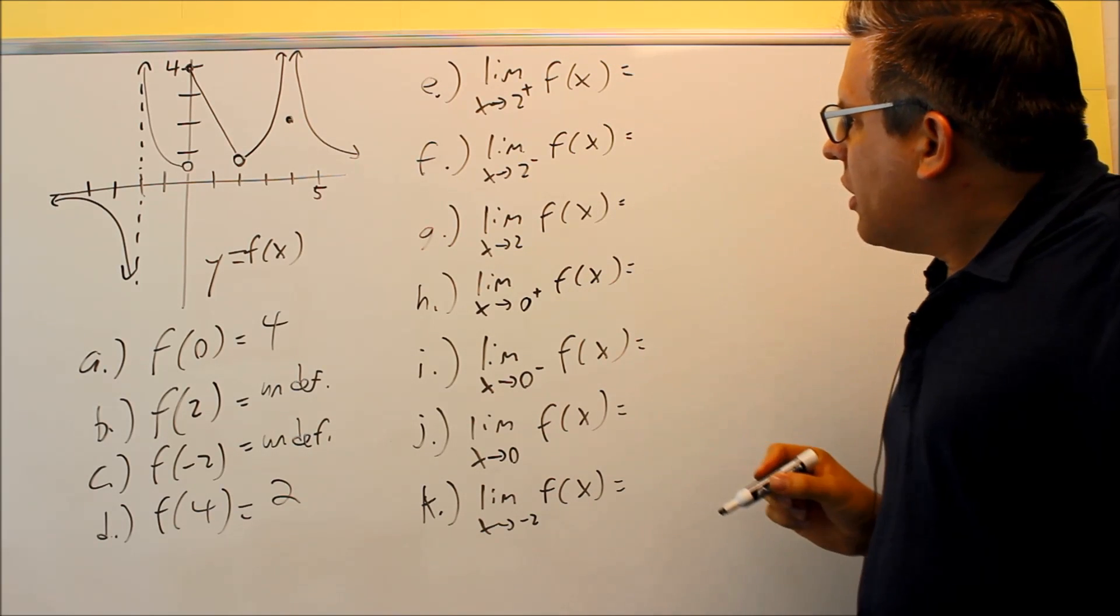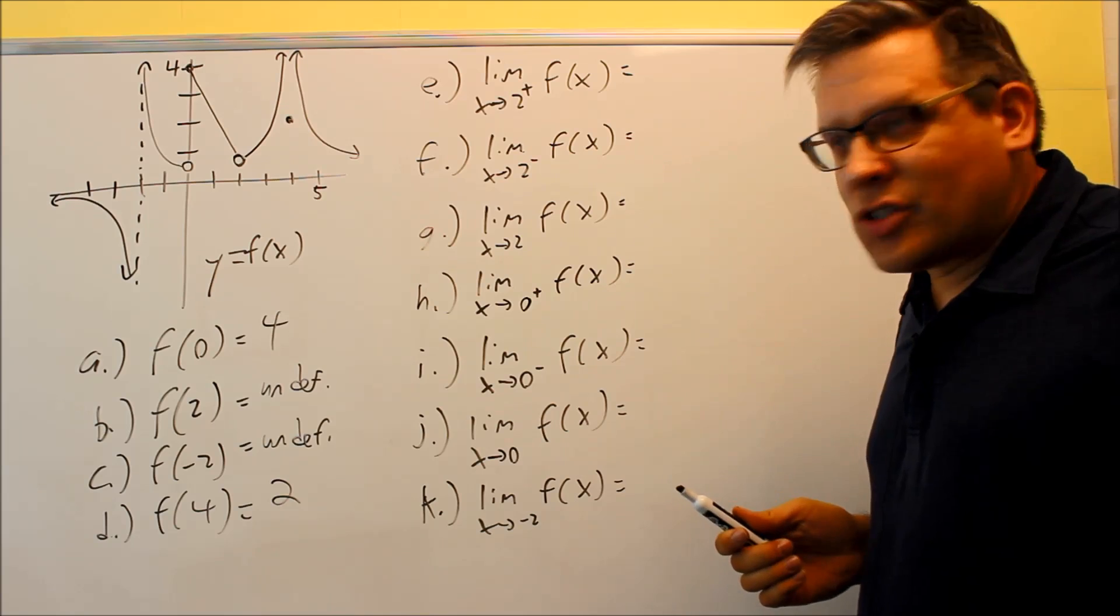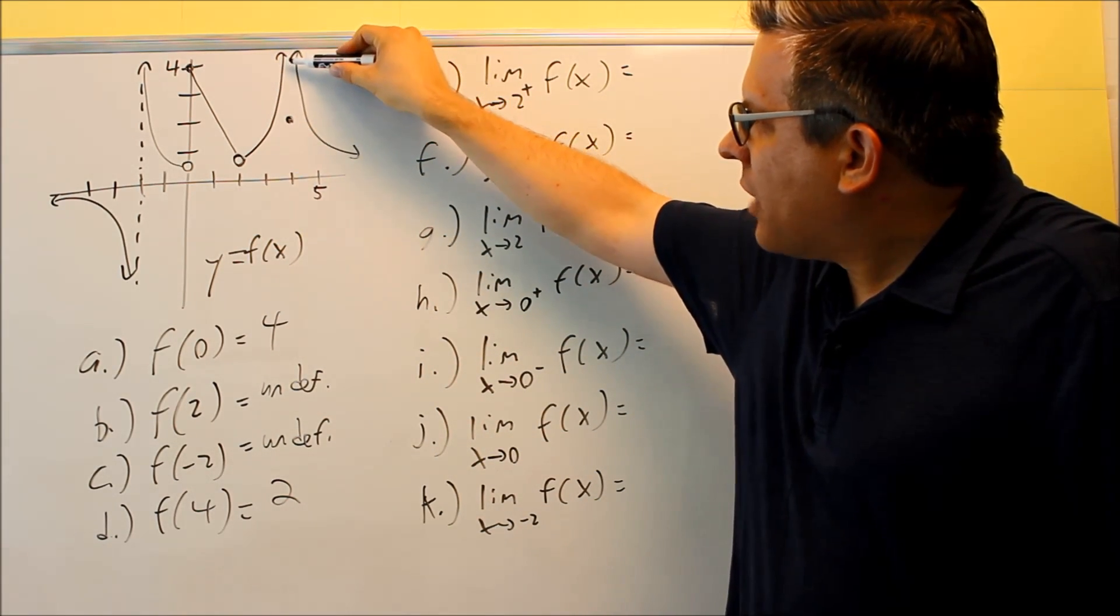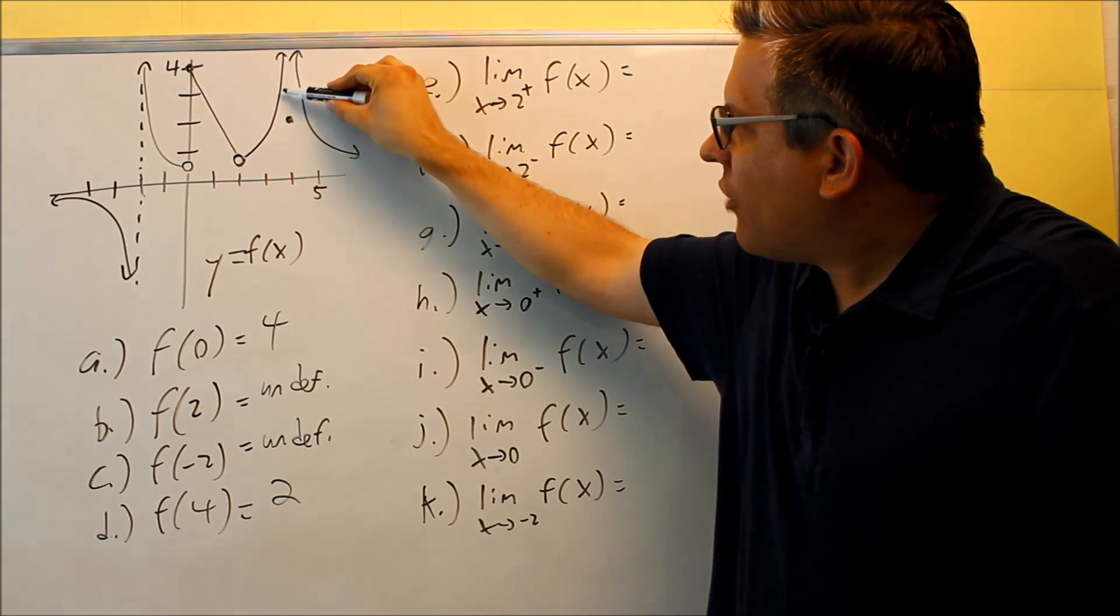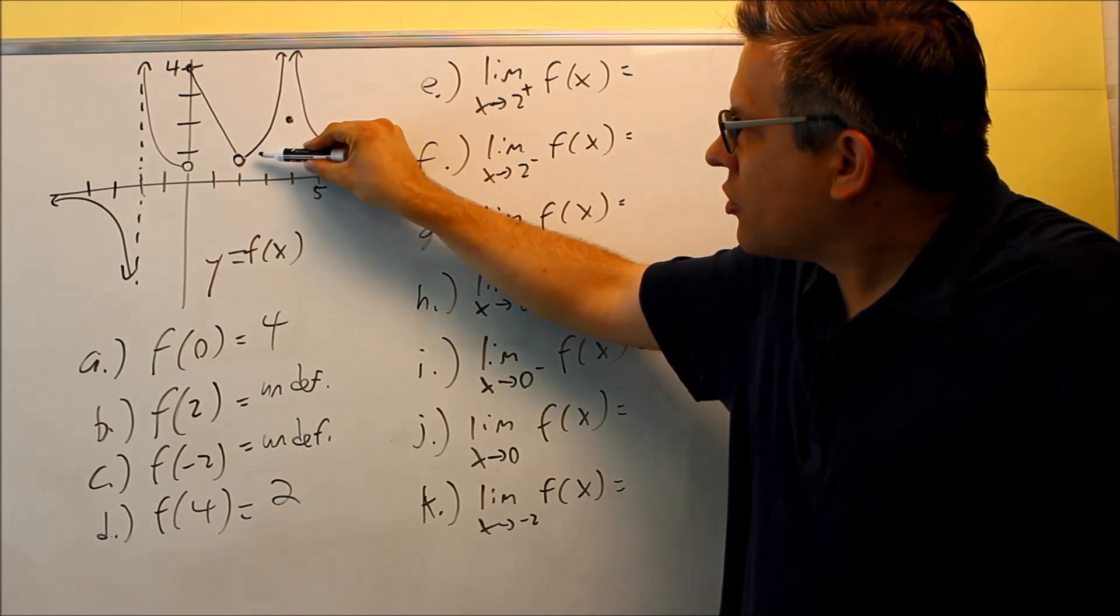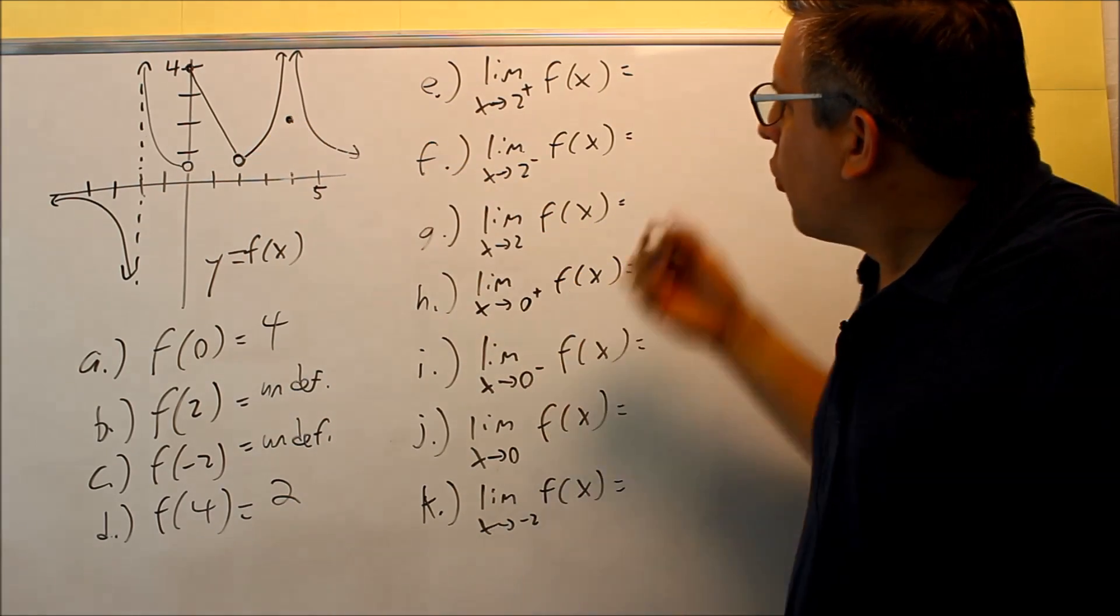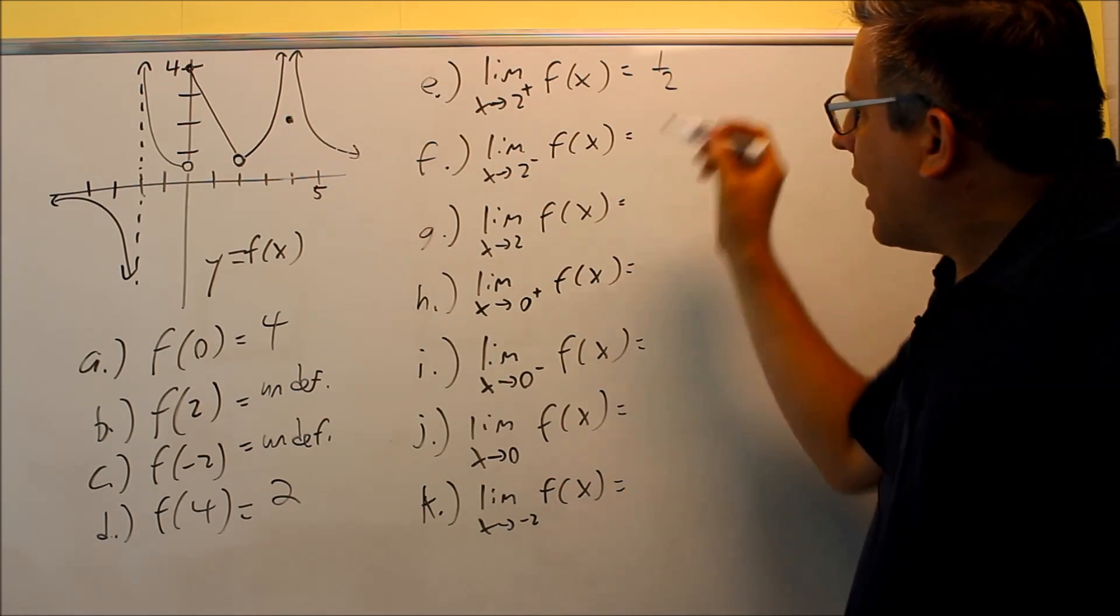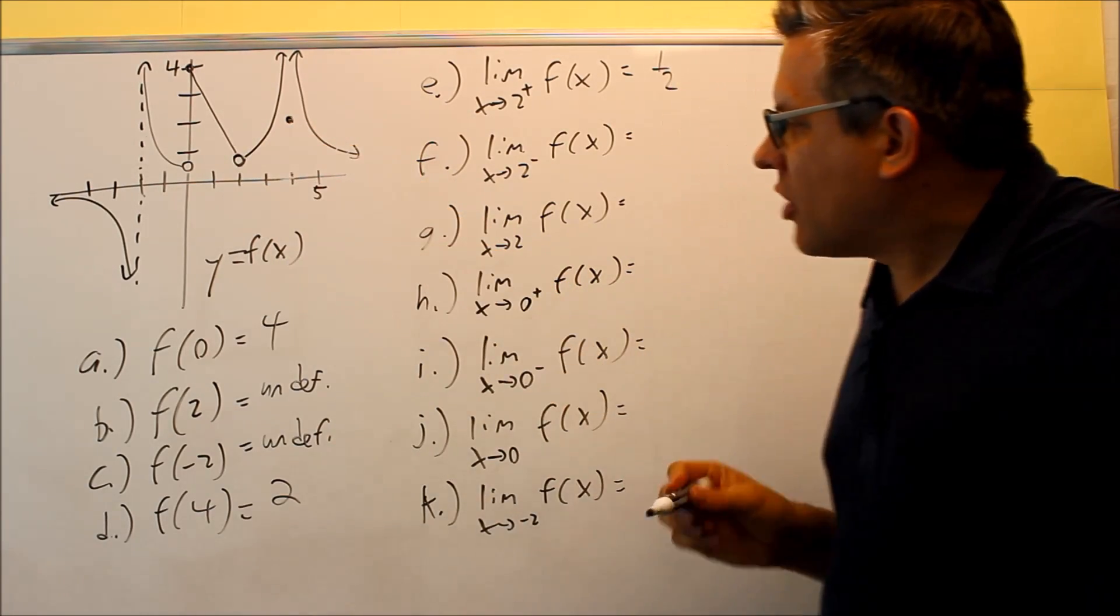They want the limit as you approach two from the positive side. Here's two right here - we want to approach it from the positive side, which means we're not on the straight piece, we're on the curved piece. We're going to follow that down until we get closer and closer to two, and it's approaching the y value of one half. That's the limit as you get really close to that one, even though the point itself is undefined.